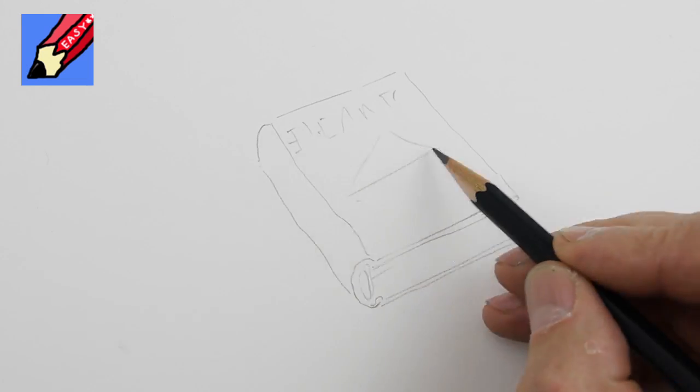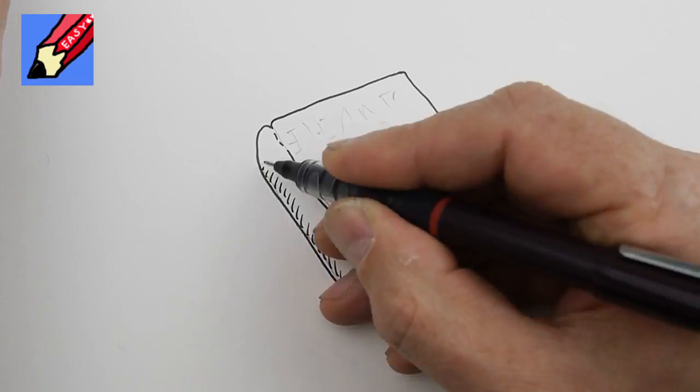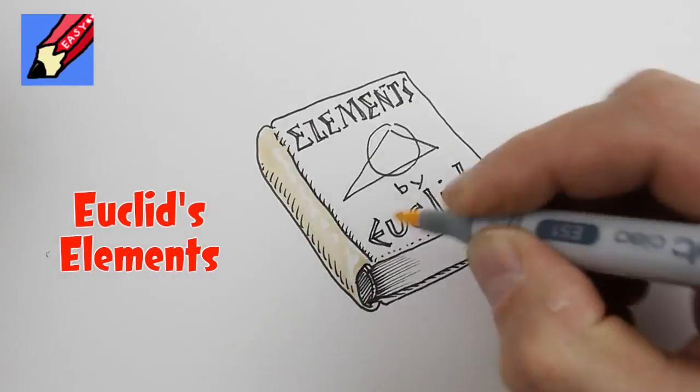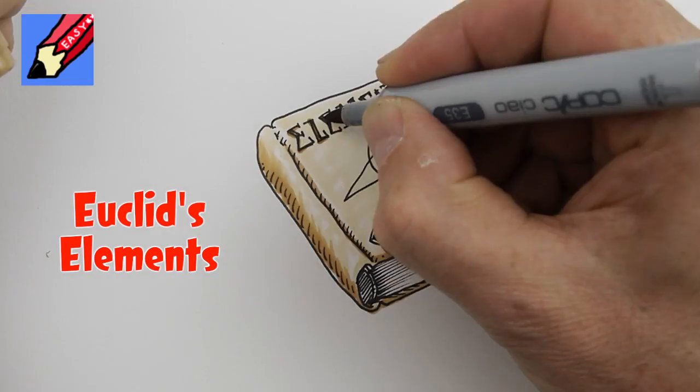Euclid wrote the first great book on mathematics and geometry. It must have been a really good book because they were still using it every day in schools well into the 20th century.